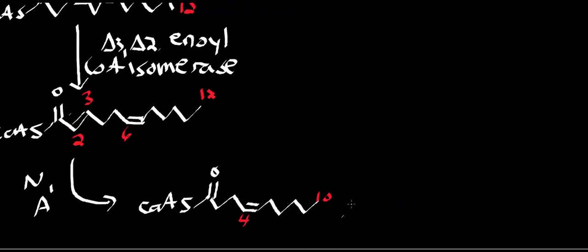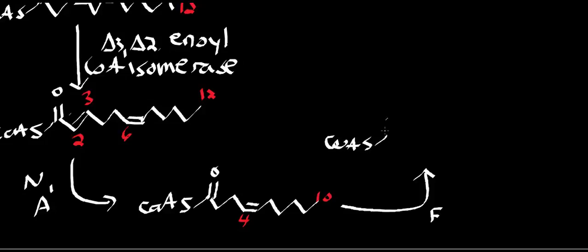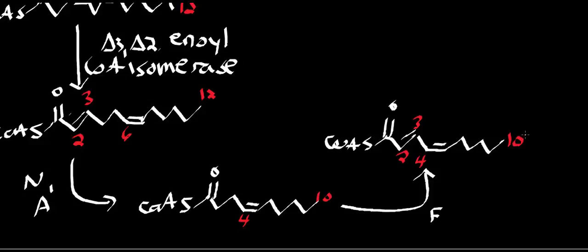Now we're going to do the initial oxidation in beta-oxidation with the FAD-dependent enzyme — it uses FAD and generates an FADH2. We get a trans bond introduced, so there's now a double bond at C2-C3 alongside the existing double bond at C4. You might be tempted to say this will just do beta-oxidation again, but it turns out it doesn't — it actually uses a different enzyme.